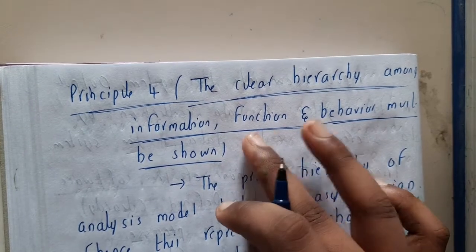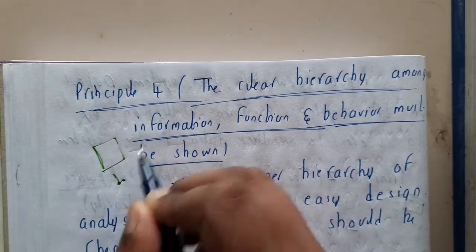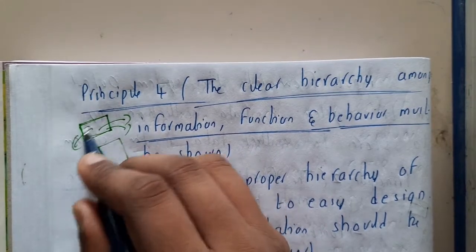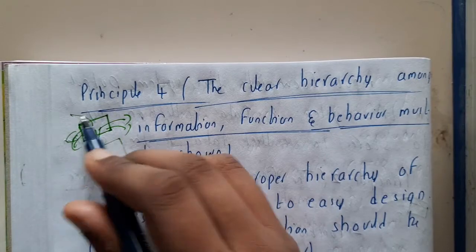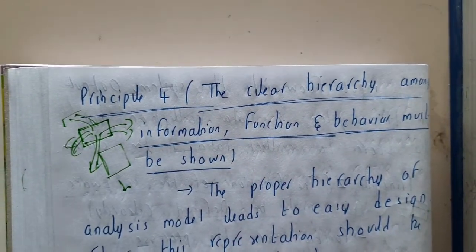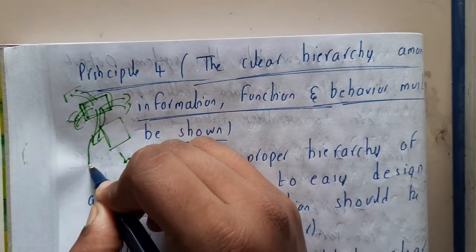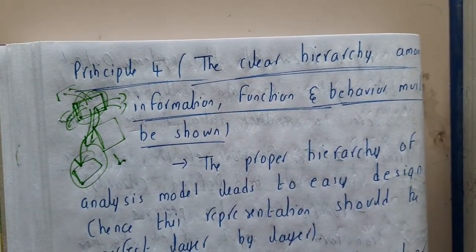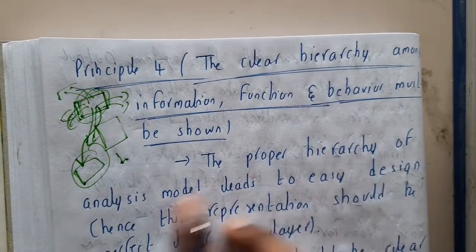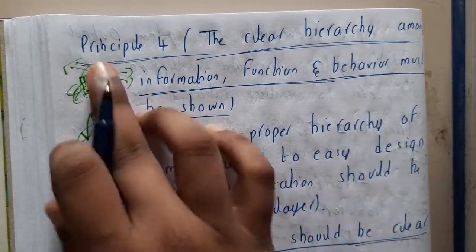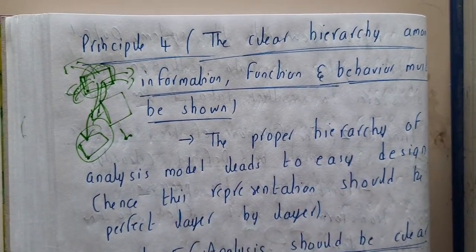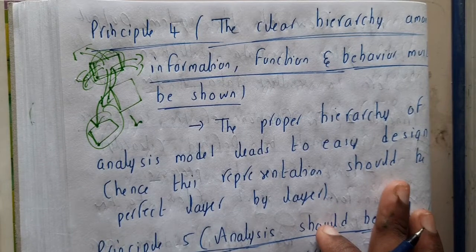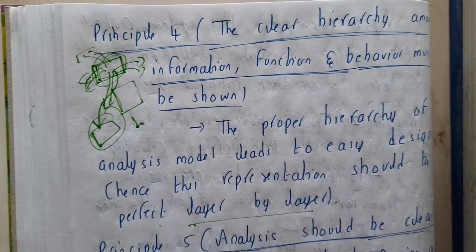Principle four: a clear hierarchical representation of information, functions, and behavior must be shown. After analysis you go to design and then coding, so in analysis only you should analyze everything — what should be the class name, what are the functions and variables inside the class, what input it takes, what output it gives, and the proper hierarchy. If a main class is hierarchically connected to a child class, all these properties and relations should be identified. A proper hierarchy in the analysis model leads to an easy design.